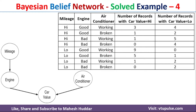Given these nodes, first we need to calculate the conditional probabilities for each of these nodes, and then we need to calculate the probability for the given condition. While calculating the probability for mileage and air conditioner, we don't need to consider engine and car value, because mileage and air conditioner are independent nodes here.